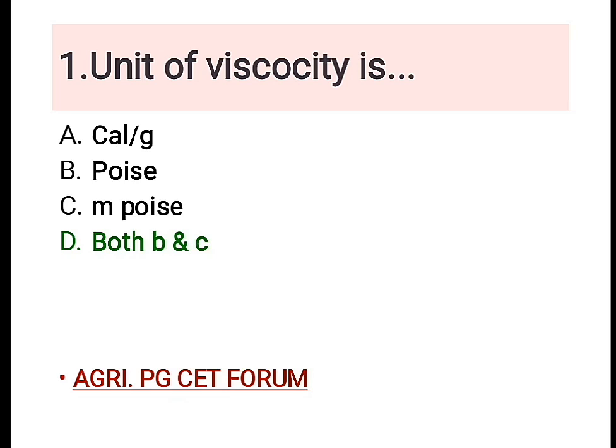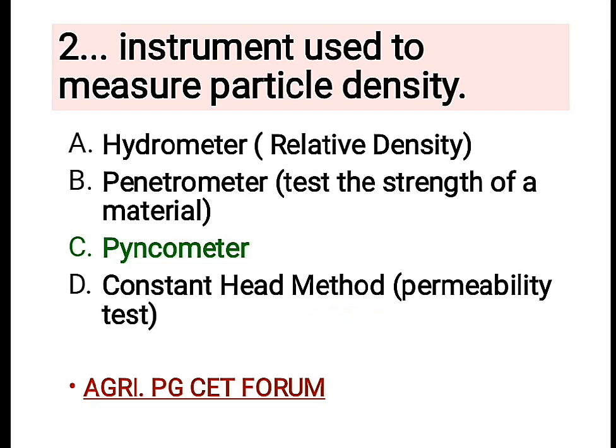Second question: the instrument used to measure the particle density. The right answer is C, which is the pycnometer. Particle density is the weight of an individual soil particle per unit volume. Other options are: hydrometer, which measures relative density; B, the penetrometer, which measures the strength of a material; and D, the constant head method, which is used to measure permeability.